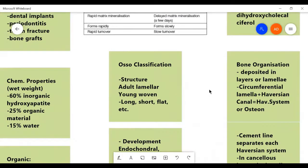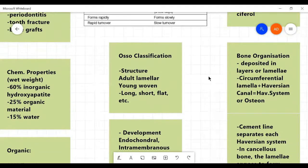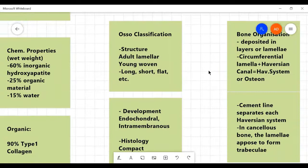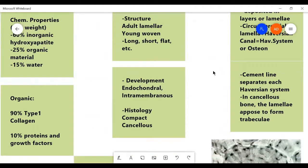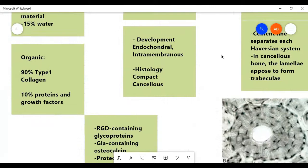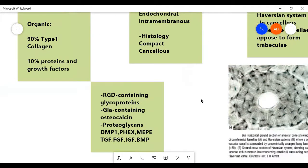Classification of osso or bone can be classified by structure as adult lamellar and young woven, on the basis of their function and their shape as long, short, flat, sesamoid, ossifying cartilage. Developmentally, they can be endochondral or intramembranous. And histologically, they can be classified as compact or cancellous.